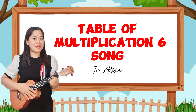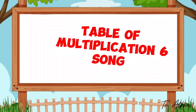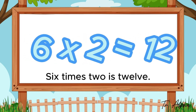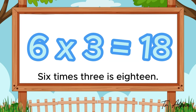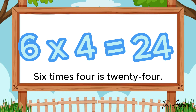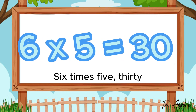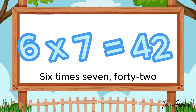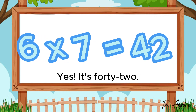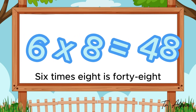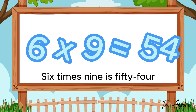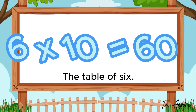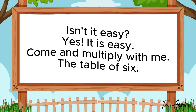Table of multiplication six. Six times one will give us six, six times two is twelve, six times three is eighteen, six times four is twenty-four, six times five is thirty, six times six is thirty-six, six times seven is forty-two, six times eight is forty-eight, six times nine is fifty-four, six times ten is sixty. The table of six. Isn't it easy?